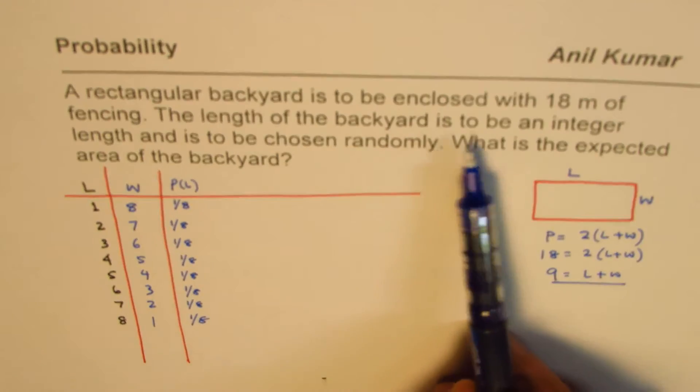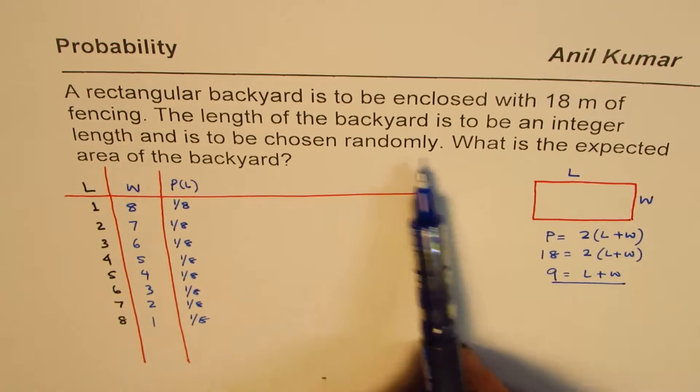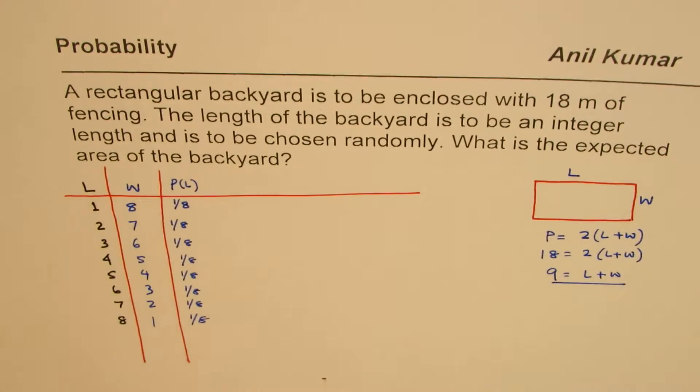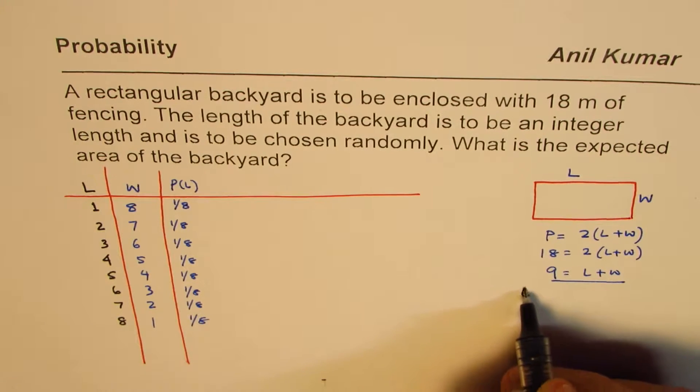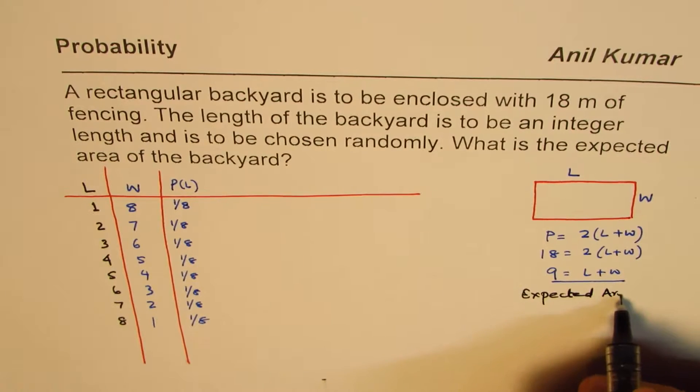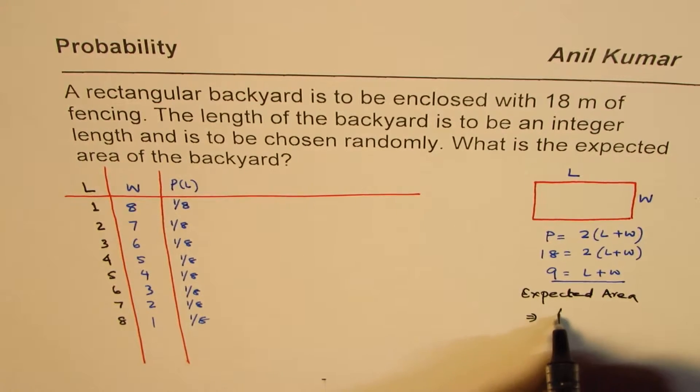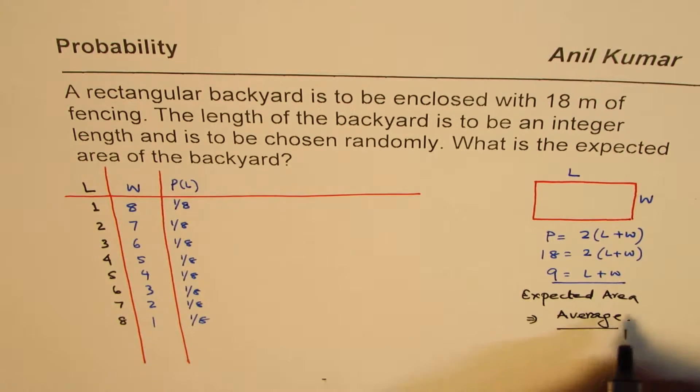It says length of the backyard is to be an integer length and is chosen randomly. What is the expected area of the backyard? So we are looking for expected area of the backyard. Now expected area, you could also treat as average area. So expected area, let's treat this as average area. That is both the same thing. So average area.